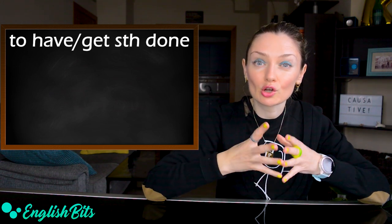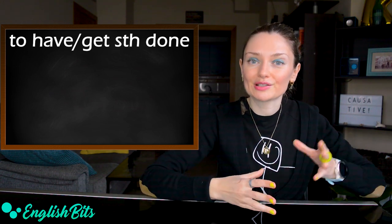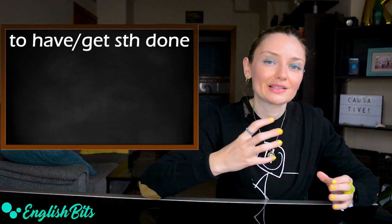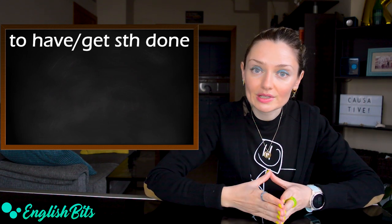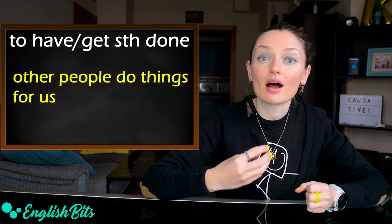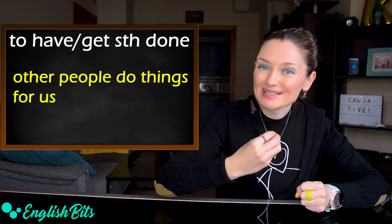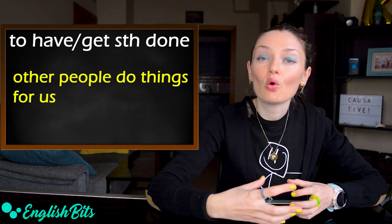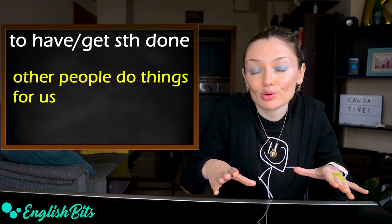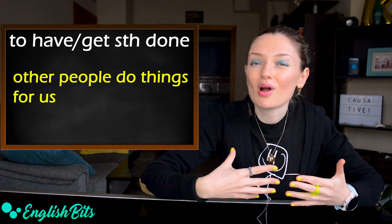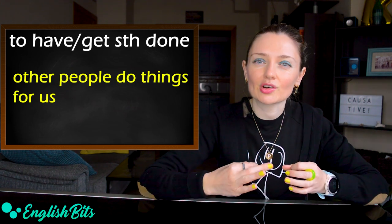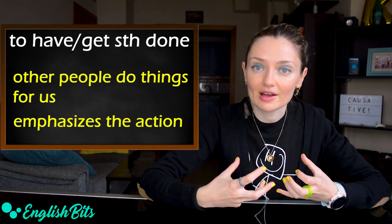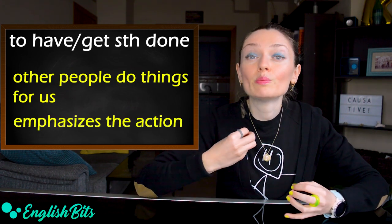Let's break down the first causative structure which is to have or to get something done. We use it to say that other people do something for us. They can be services or things we can't do or don't want to do ourselves. This structure emphasizes the action rather than who performs it.